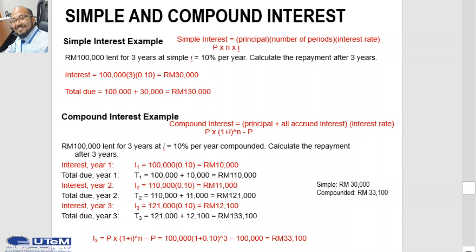Let's look at one example of how the calculation of simple interest and compound interest differ. Let's say we have RM100,000 lent for 3 years at simple interest of 10% per year. Calculate the repayment after 3 years.